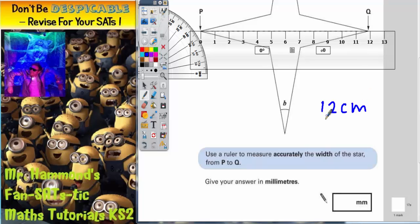Remember if it was 12 centimeters this would actually be 120 millimeters because there are 10 millimeters in every centimeter. But let's just make it a little bit more accurate by putting our millimeters on there. Now you can see that this would be 119.